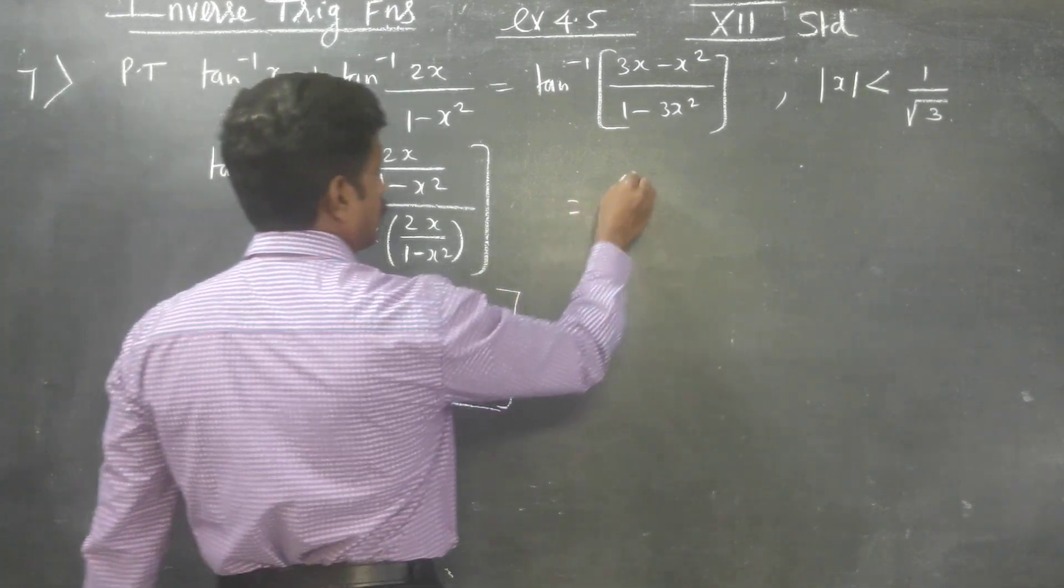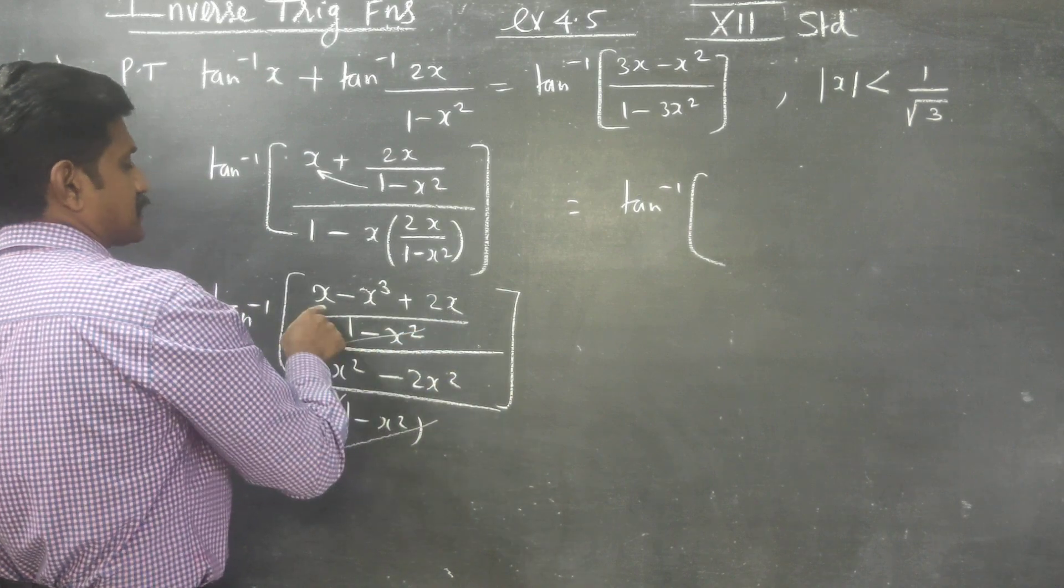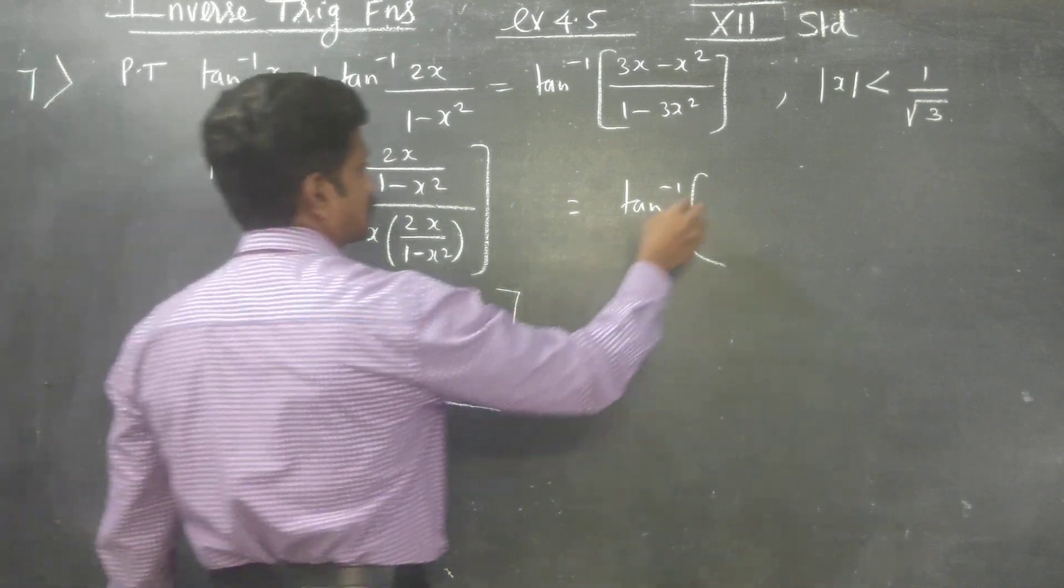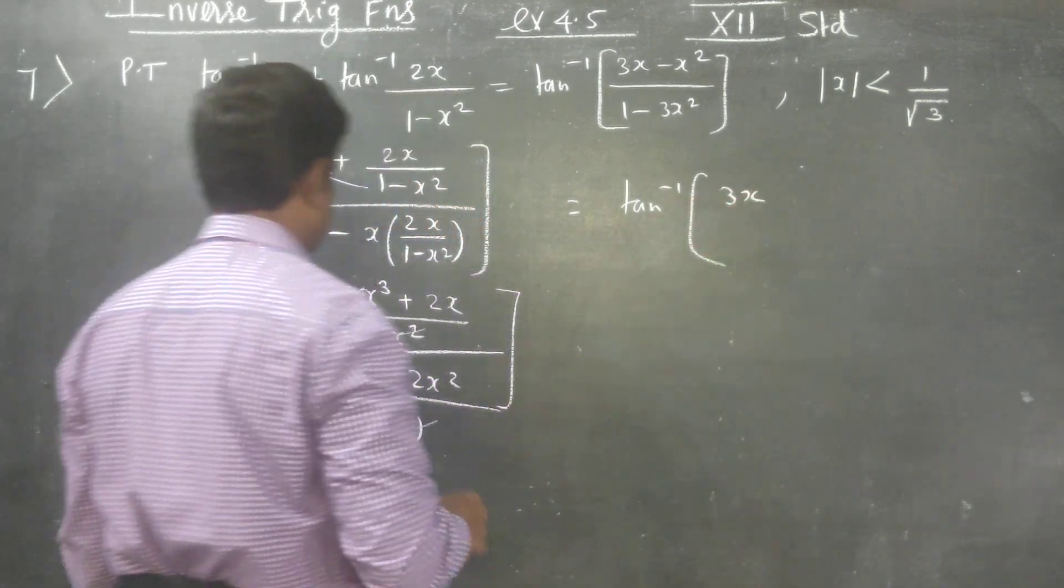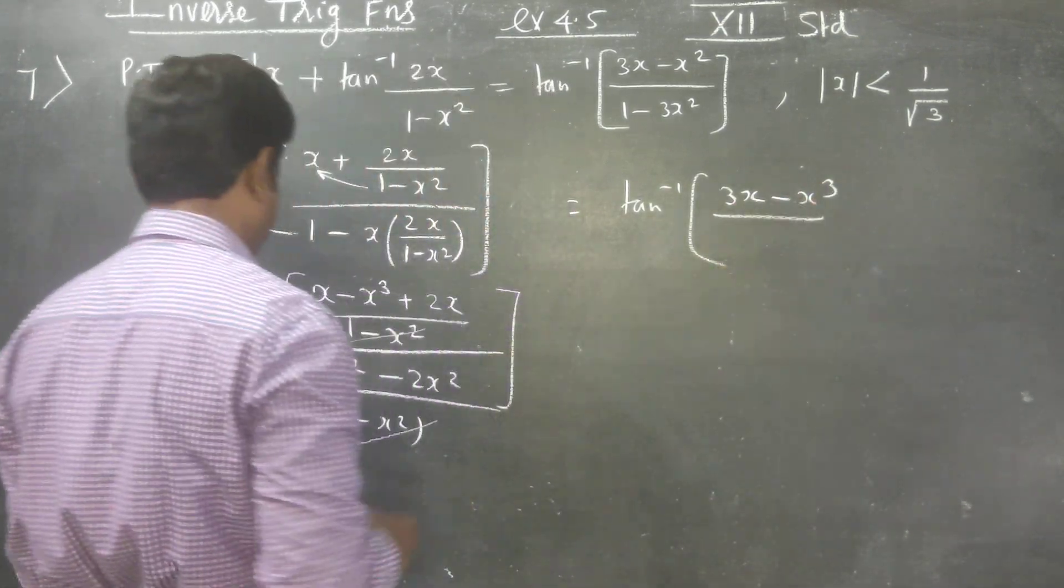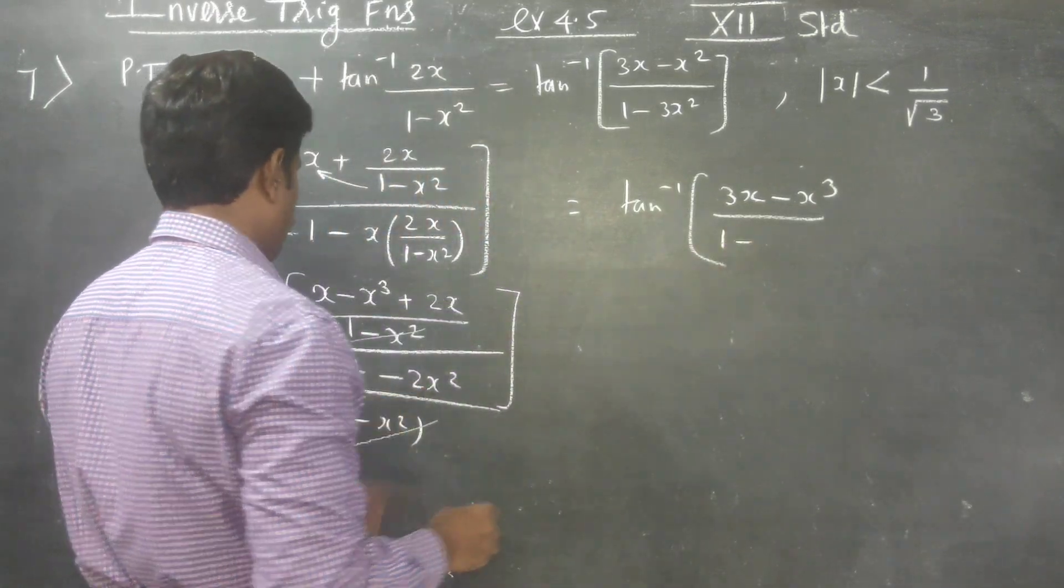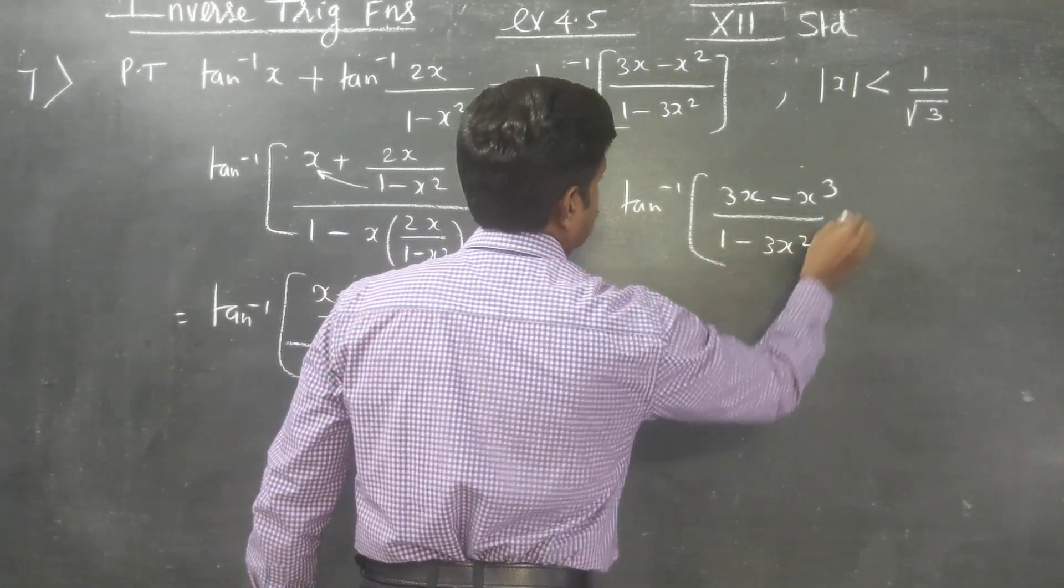Therefore your answer will be tan inverse of 2x plus x is 3x, 3x minus x cube divided by 1 minus 1 minus 3x square, 3x square.